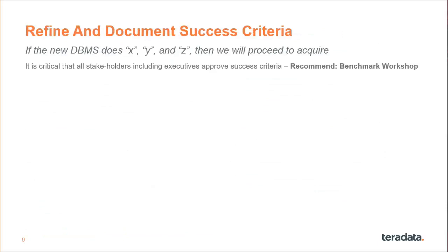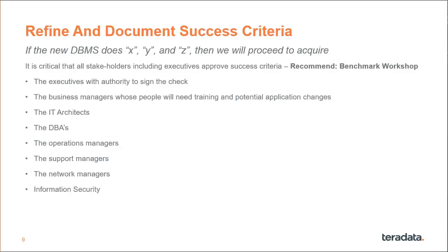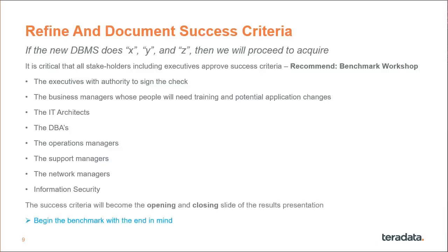One of the critical steps is that all the stakeholders — including executives, business managers, architects, DBAs, operation managers, support managers, network managers, and information security — must approve the success criteria. We often create the success criteria in a benchmark workshop and get buy-in from all stakeholders. The success criteria will end up being the opening and closing slide of the results presentation, with information in between showing how each test answered those critical success factors. It's important to begin the benchmark with the end in mind.